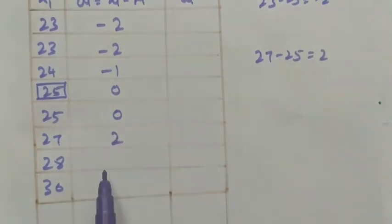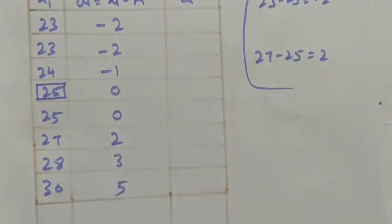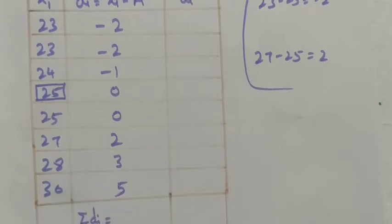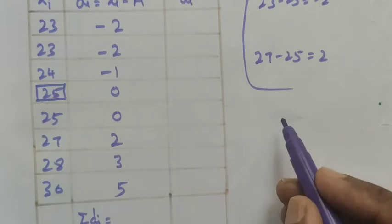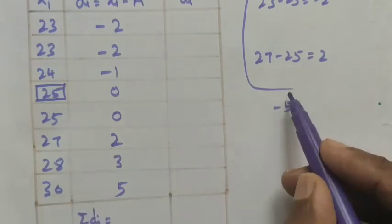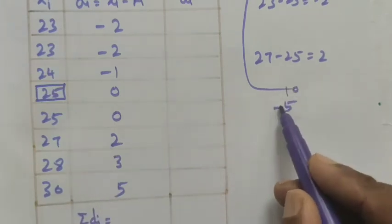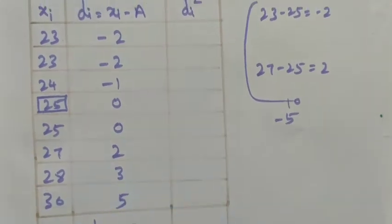Now find summation di. The sum of the negative values is minus 5, and the sum of the positive values is 10. So summation di = 10 minus 5 = 5. Next we need to find di squared for each value.